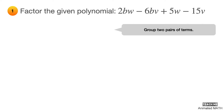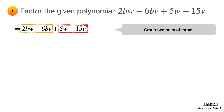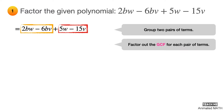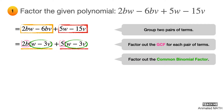Group two pairs of terms and work on them separately. The pairs of terms are shown using the orange and red boxes. Factor out the greatest common factor from each pair of terms. These GCFs are 2b and 5. Factor out the common binomial factor, which is W minus 3V. You can then combine the GCFs from each pair of terms so that they form another binomial factor, which is 2b plus 5. And the final answer is (2b + 5)(W − 3V).